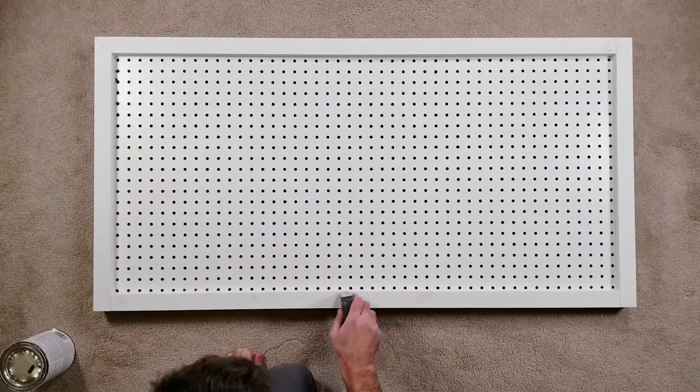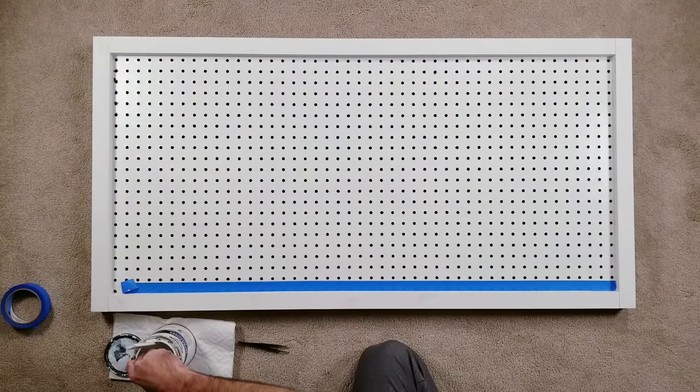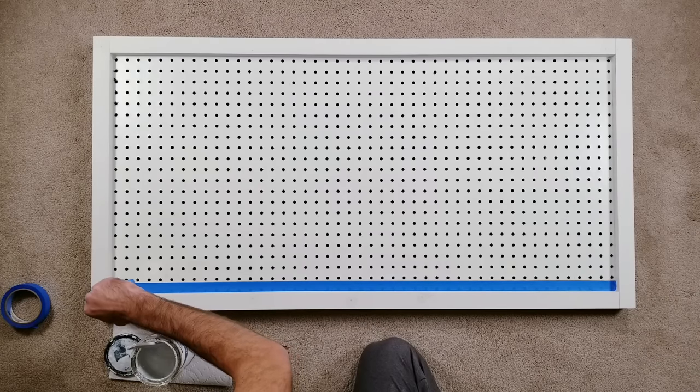And finally after giving the dried spackling a light sand I'm going to give the front 1 by 2s a fresh coat of white paint. At this point you may also decide to paint the sides of the back pieces since they'll also be somewhat visible.